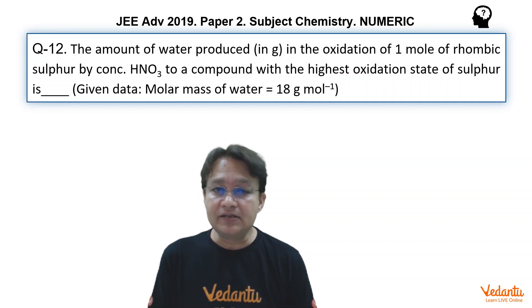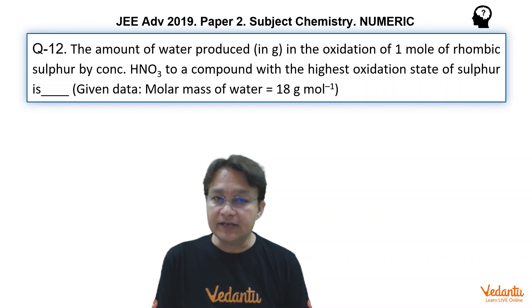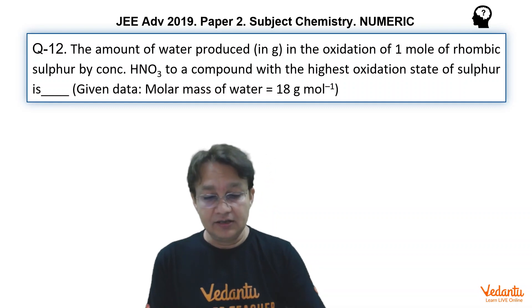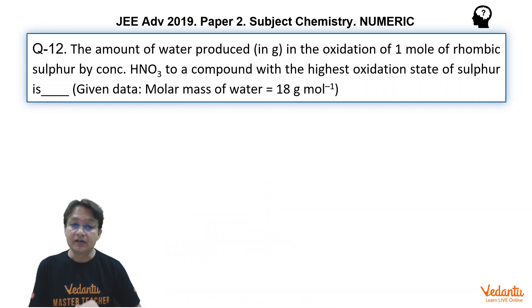The problem is a very simple problem. The only thing is we need to know something to solve this problem. The amount of water produced in the oxidation of 1 mole of rhombic sulphur by concentrated HNO3 to a compound with the highest oxidation state of sulphur is.